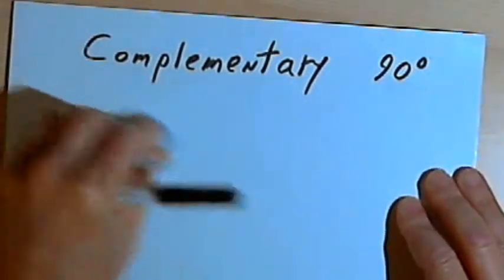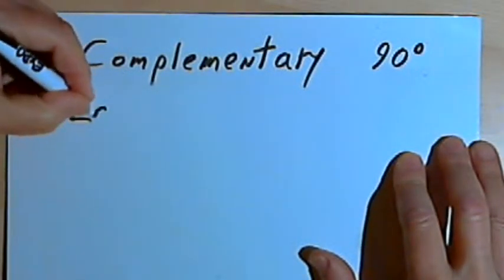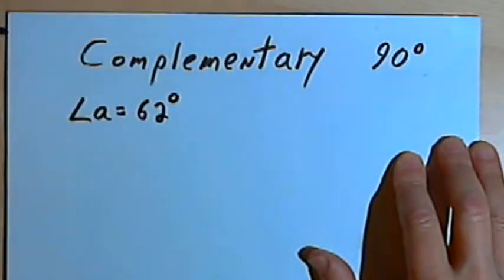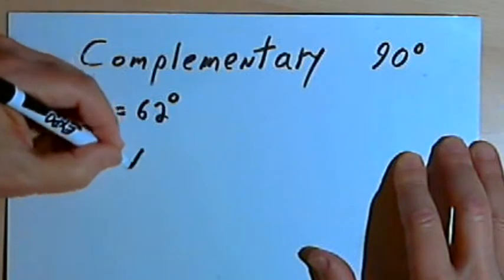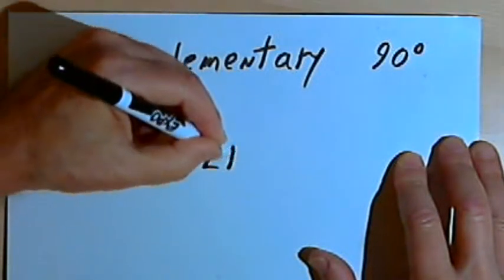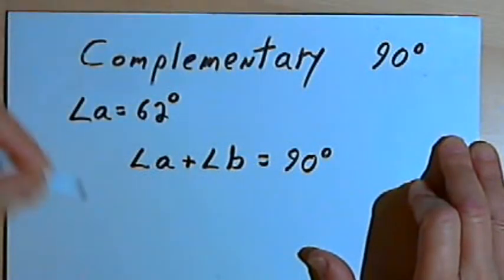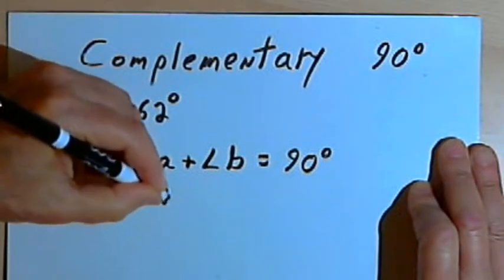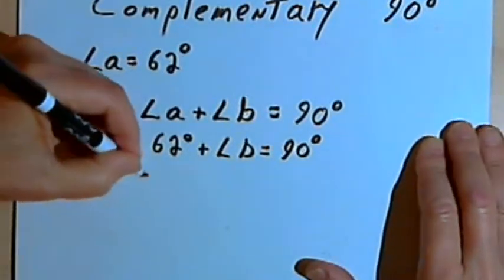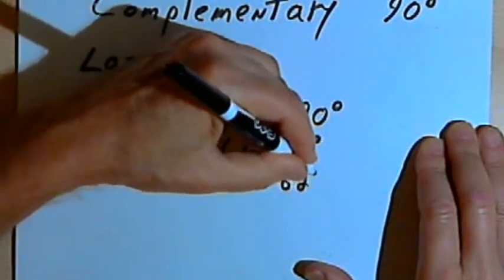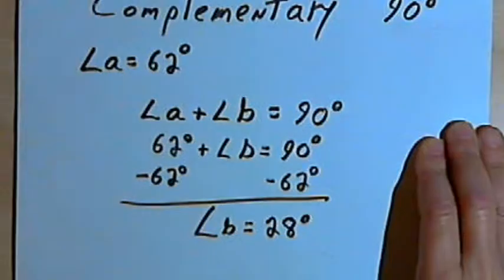If we're given one angle, we can find the size of its complementary angle. So if I'm told that angle A equals 62 degrees, then I can find angle B. All I have to do is remember that angle A plus angle B, if they're going to be complementary, would have to add up to 90 degrees. Angle A measured 62 degrees, so 62 degrees plus angle B would equal 90 degrees. Then when I subtract 62 degrees from both sides, I would find that angle B equals 28 degrees.